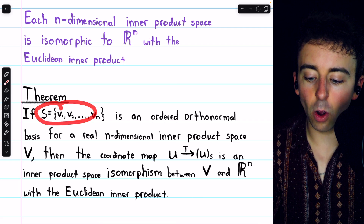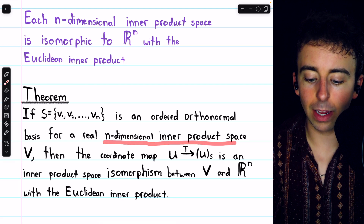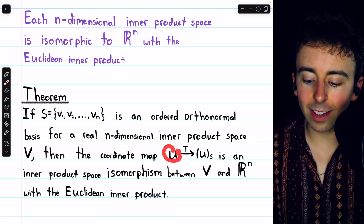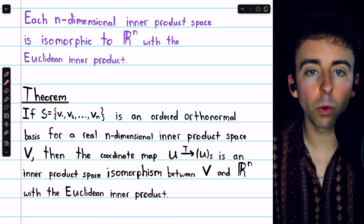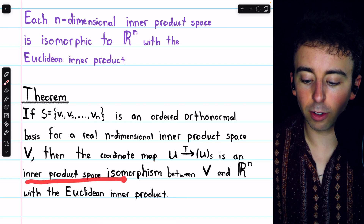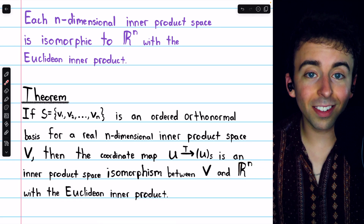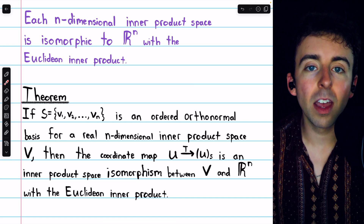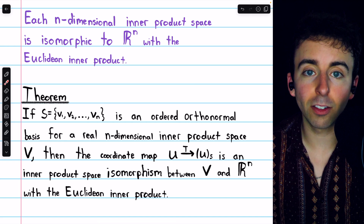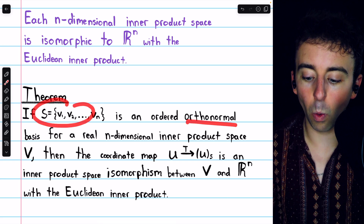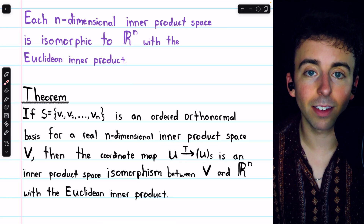This theorem tells us exactly what that isomorphism would be from a given inner product space to Rn. If S is an ordered orthonormal basis for a real n-dimensional inner product space V, then the coordinate map that takes each vector U and sends it to its coordinate vector relative to that orthonormal basis S is an inner product space isomorphism between V and Rn with the Euclidean inner product. We saw a similar theorem with vector space isomorphisms, but the basis just had to be ordered. Now that we're talking about inner product space isomorphisms, this basis also needs to be orthonormal.